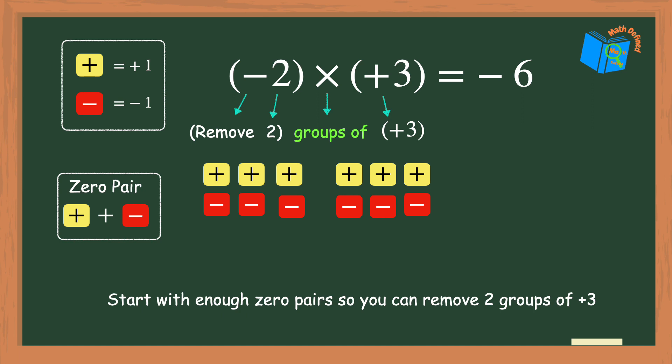Now I'm able to remove two groups of positive 3. And as you can see there are six negative counters left so the answer is negative 6.